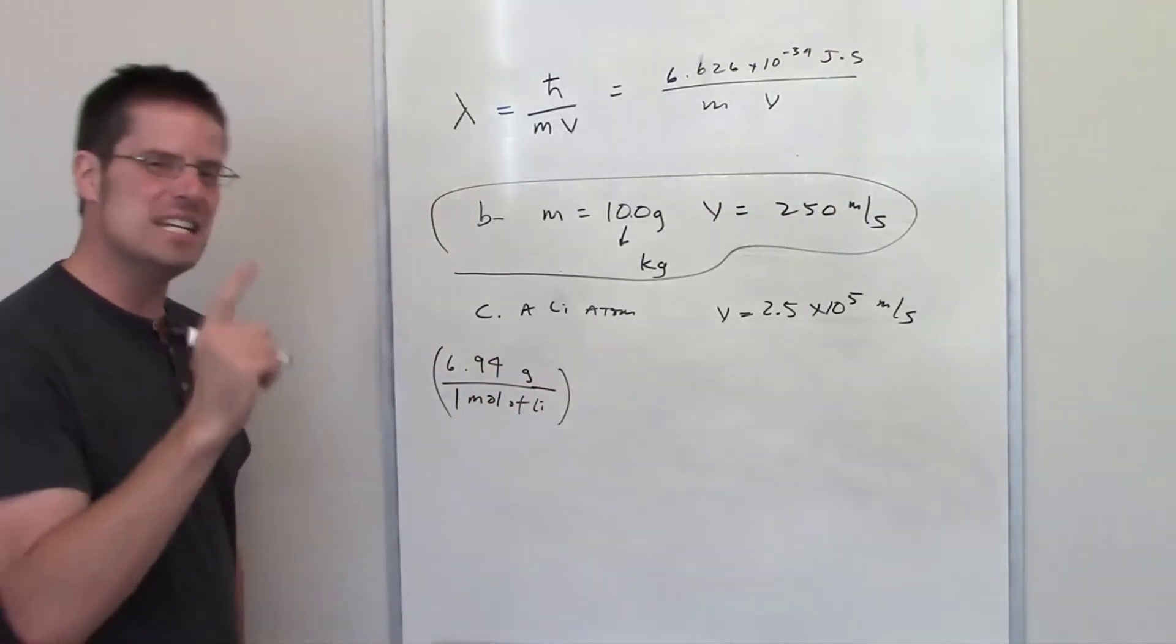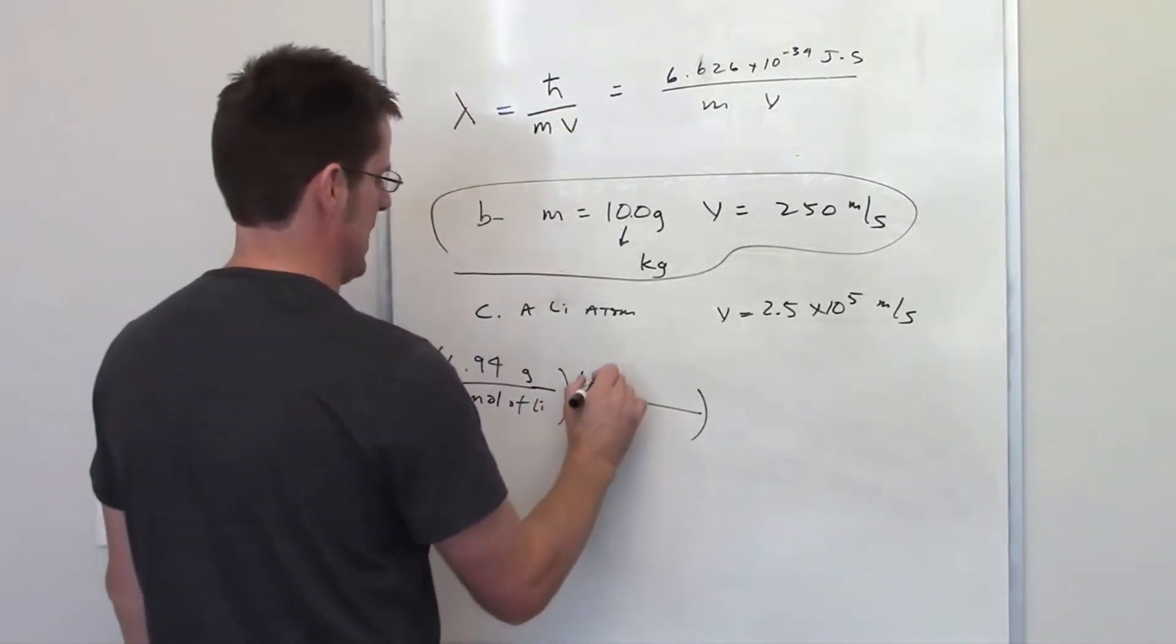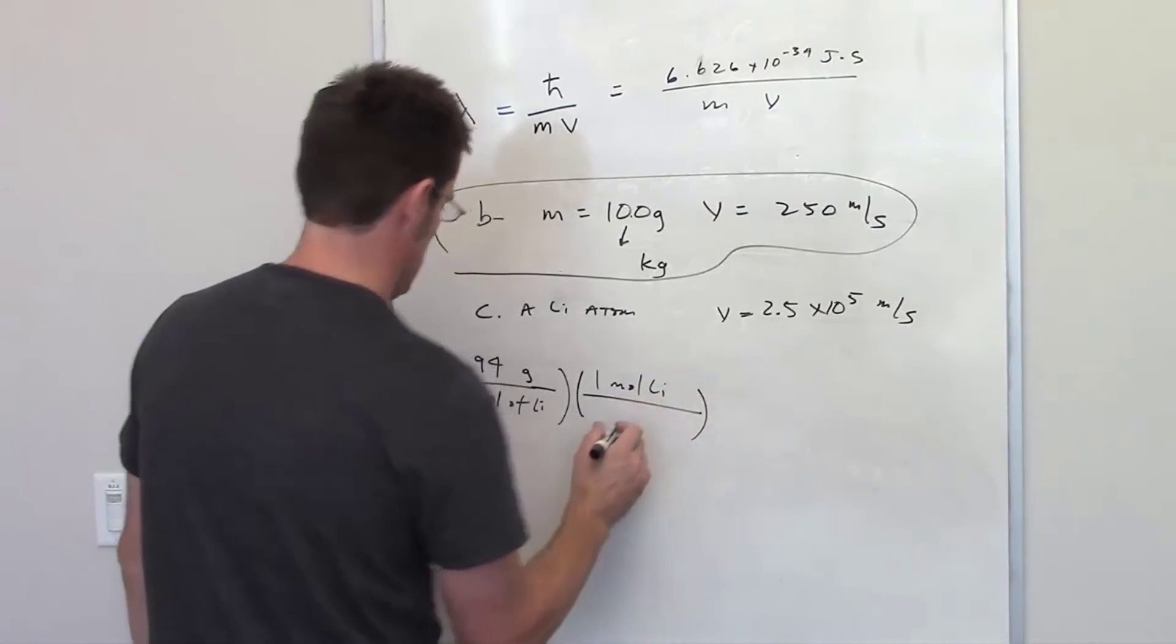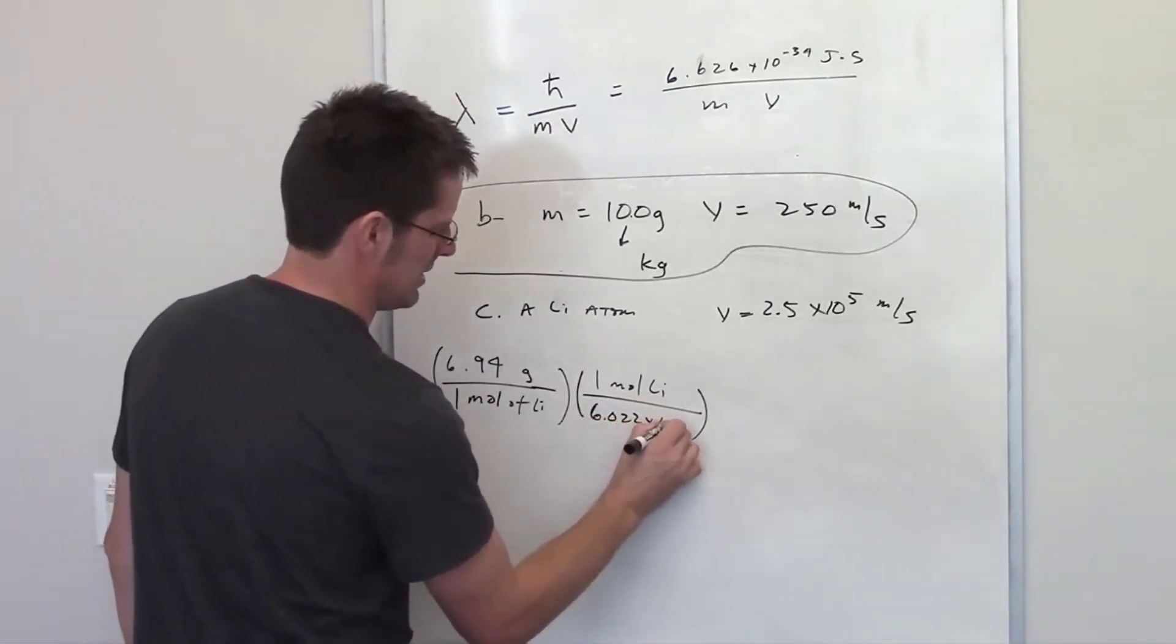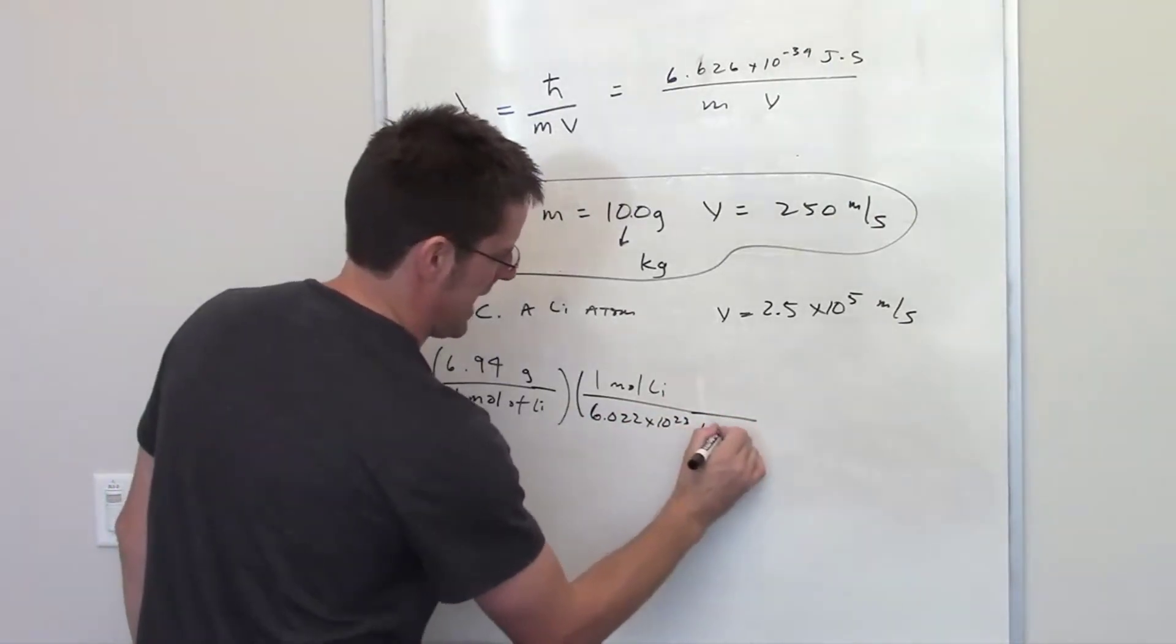We're trying to figure out what the mass is of an individual lithium atom. If I had one mole of lithium atoms, I would have 6.022 times 10 to the 23rd lithium atoms. You'll notice the moles of lithium cancel each other out.